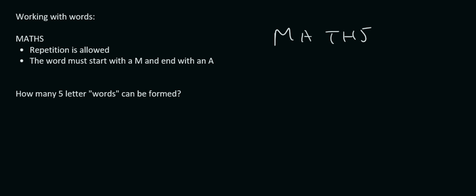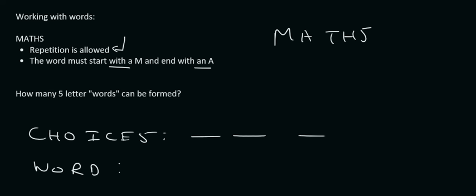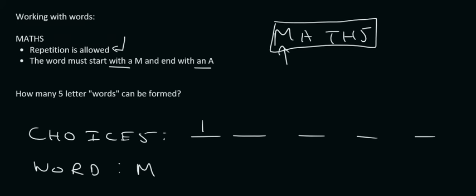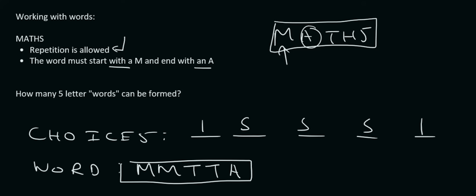Here I've changed the criteria a little bit: repetition is allowed, but the word must start with an M and end with an A. So for the first choice, there's only one M, so we put a one there. For the second, third, and fourth letters, repetition is allowed so we have five options each. And for the last position, there's only one A, so that's also one. We multiply: one times five times five times five times one, which gives us 125.